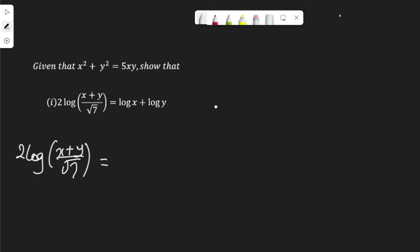So, apply the log rule that says log p to the power n to base a is n log p to base a. This expression here is in this form. I want to change it to this form. So, I have log (x plus y) over root 7 to the power of 2. Apply this log rule.